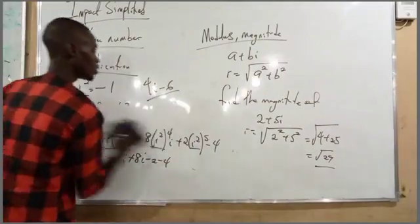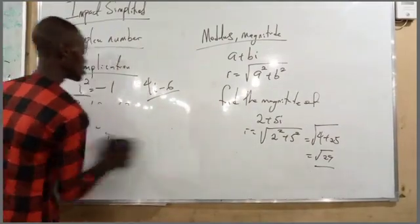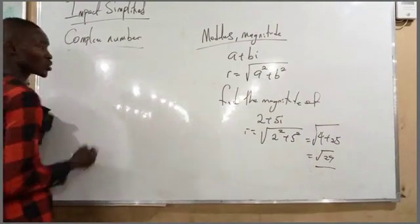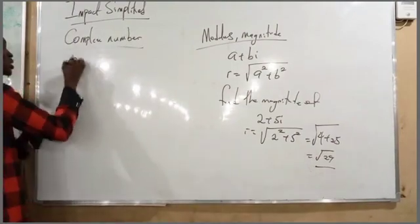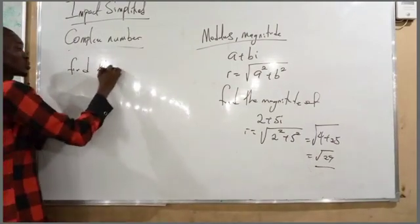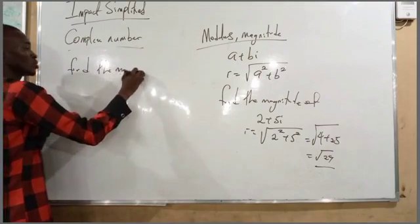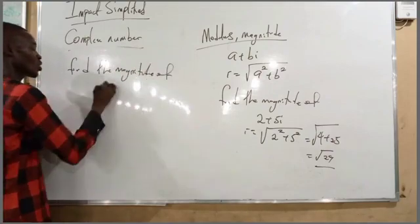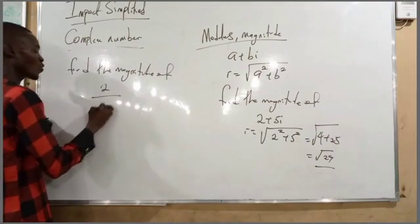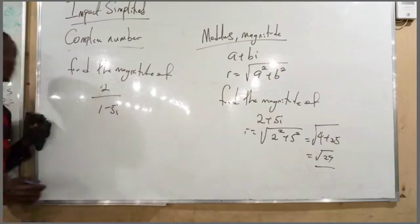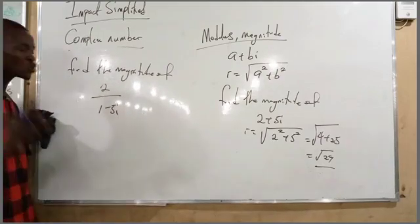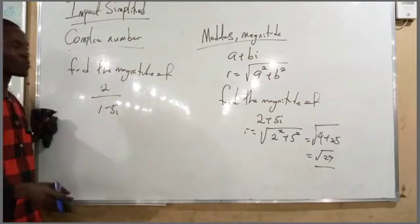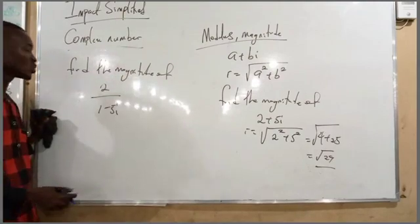Now let's find the magnitude of 2 over (1 minus 5i). We have to simplify this first before finding the magnitude. We rationalize by multiplying by the conjugate (1 plus 5i) over (1 plus 5i).